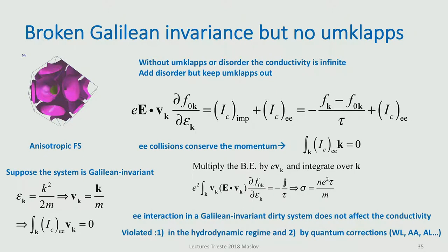If I bring back the lattice, I still have momentum conservation because I eliminated umklapp and have only normal collisions. They conserve momentum, but for a trivial reason: the velocity on the lattice is not equal to k over m. So when I take the Boltzmann equation and multiply it by the velocity, the impurity term still gives me the current, but the electron-electron term doesn't vanish, because velocity is not the same as k over m. Being non-zero, it will give me the rate of change of current due to electron-electron collisions. So I cannot eliminate the electron-electron interaction — it will contribute.